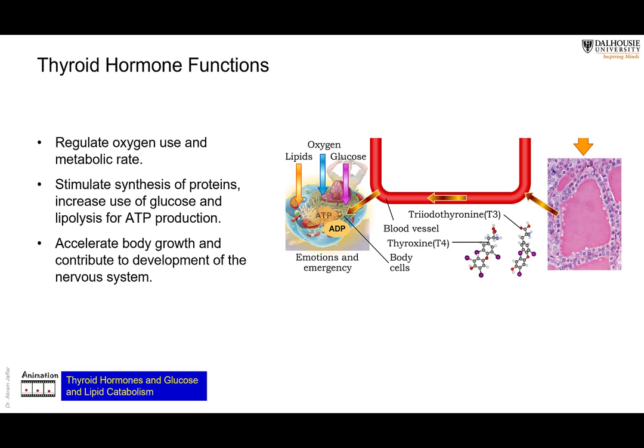The thyroid hormone generally regulates oxygen use and metabolic rate — it increases oxygen use and metabolic rate. It stimulates the synthesis of protein, and in order to provide more energy, it stimulates glycolysis and lipolysis. It also accelerates the development of the nervous system in the first year of life.